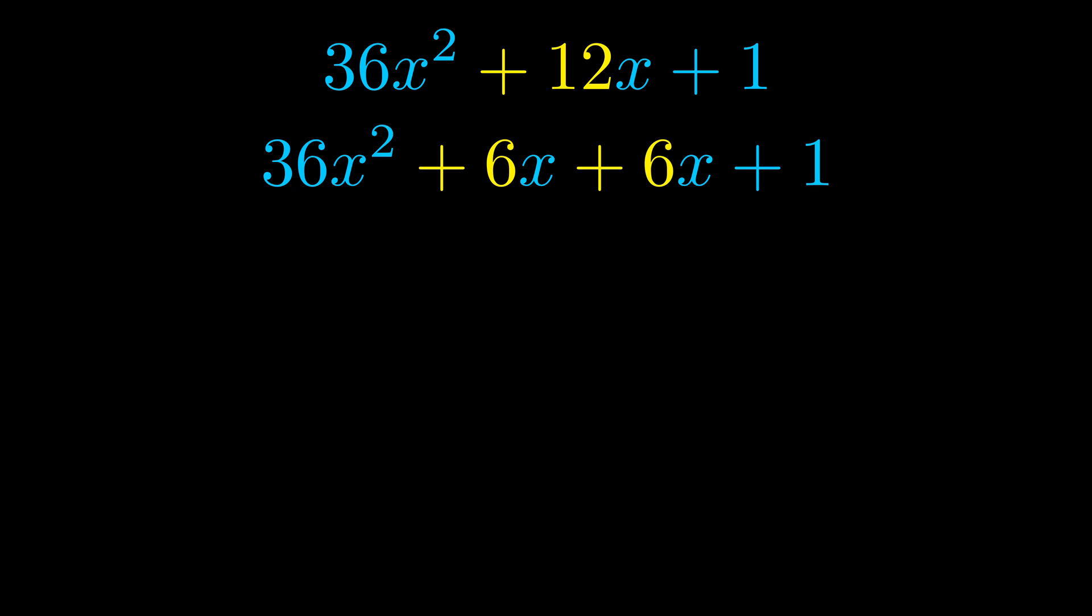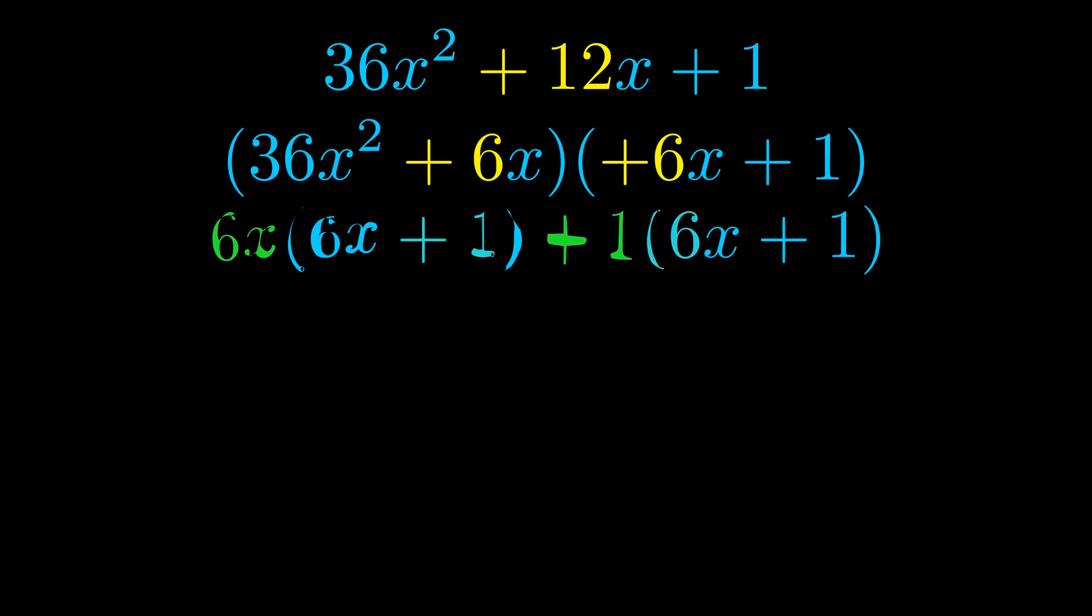Once we've done this, we go ahead and we put parentheses around the first term and the last term. And we do that so that we can take the greatest common factor out of both terms. We can see the greatest common factor is now outside in green.